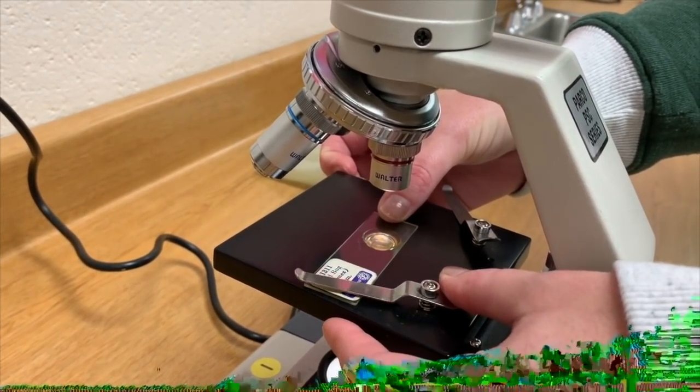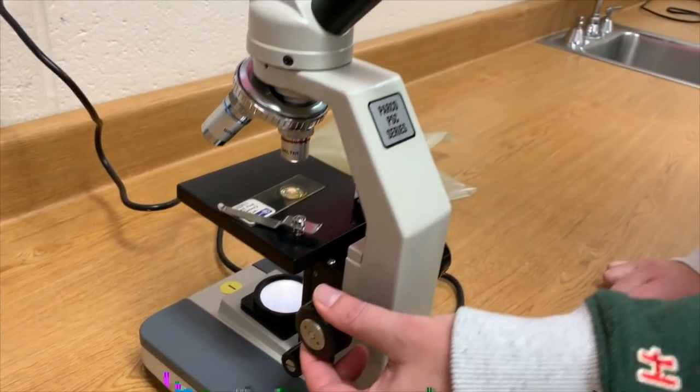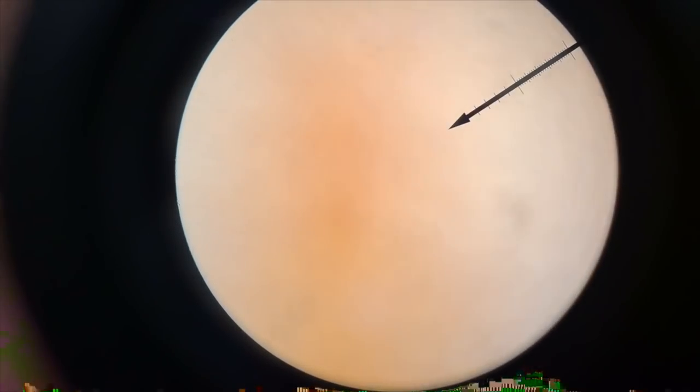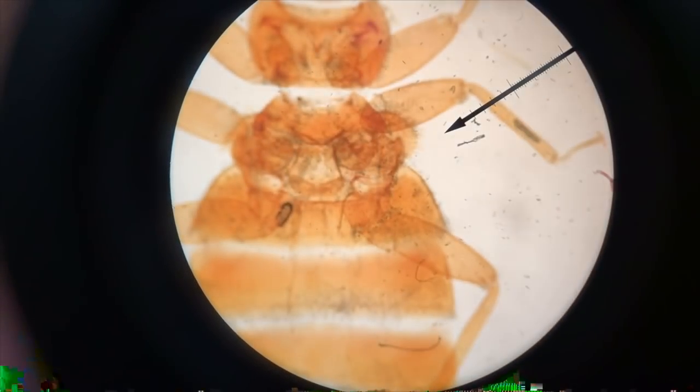And then we are going to move the coarse adjuster toward us with our eye on the eyepiece. When your eye's to the eyepiece, you're moving that coarse adjuster toward you until you can see that object come into focus. Wow, into focus, there it is! So now we can see our bed bug on low power.